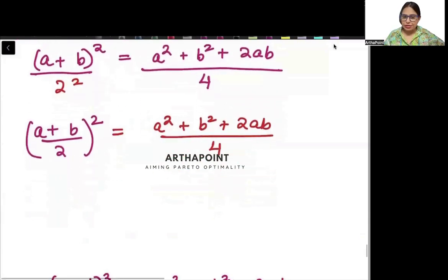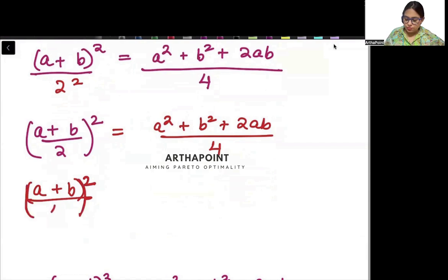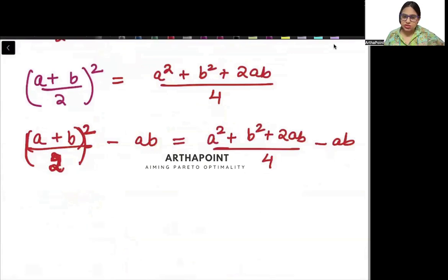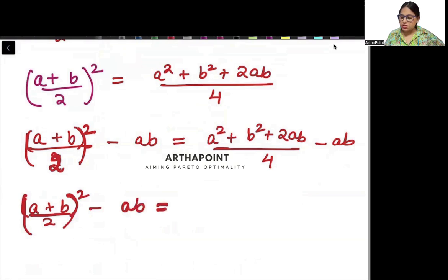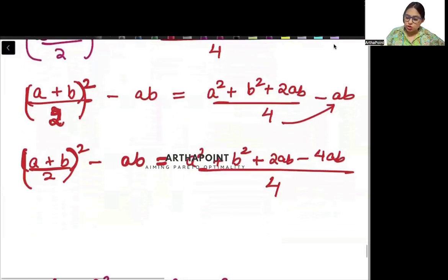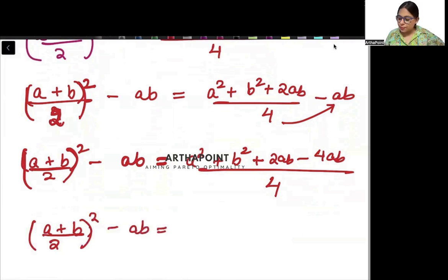Now I can subtract ab from both sides. So (a plus b by 2) whole square minus ab is equal to (a square plus b square plus 2ab) by 4 minus ab. Taking common denominator, this gives (a plus b by 2) whole square minus ab is equal to (a square plus b square minus 2ab) by 4.